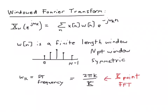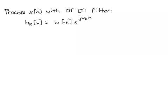Now I said we could somehow relate this to the output of a filter, so let's see how we do that. Let's consider processing the signal x of n with a discrete time linear time invariant filter that I've called h_k of n, and I've defined it as being w of minus n, so that's that window we used before, times e to the j omega k n.